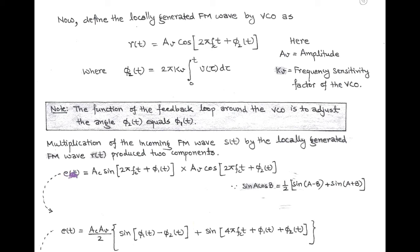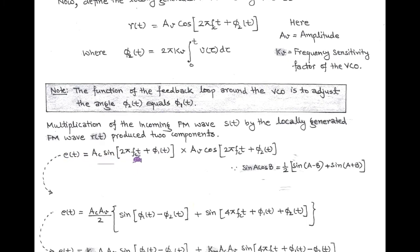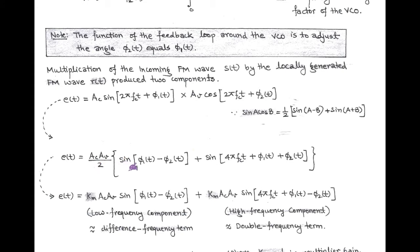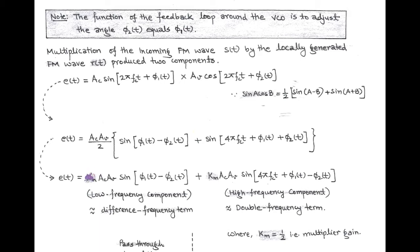The output of the multiplier, the error signal, equals AC·sin(2π·fc·t + φ1(t)) times A_V·cos(2π·fc·t + φ2(t)). The first expression is the incoming FM wave and the second is the locally generated FM wave. Using the identity sin(A)cos(B) = ½[sin(A−B) + sin(A+B)], the error signal becomes ET = AC·A_V/2 · [sin(φ1 − φ2) + sin(4π·fc·t + φ1 + φ2)]. We introduce multiplier gain K_M equal to 1/2.